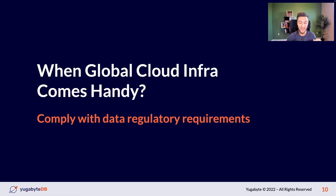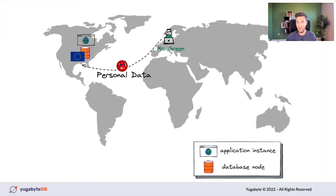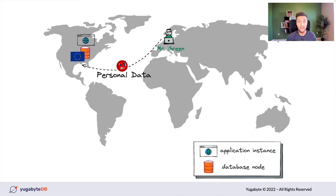Let's review this case. Mr. Green lives in Berlin, in Europe. You've likely heard about GDPR — the General Data Protection Regulation — a law signed by the European Union. According to GDPR, all personal data of Mr. Green has to be located in Europe. But in my current architecture, Mr. Green's data would be stored in the United States because that's where my database is running.